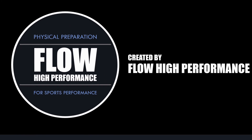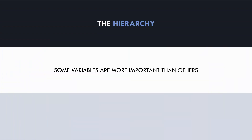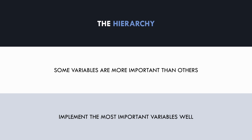Let's first establish what exactly we mean by organising hypertrophy training into a hierarchy. Essentially, a hierarchy shows that certain variables are more important than others to achieve muscle growth. So when we train for hypertrophy, we want to ensure that the most important variables are performed well, and once they are taken care of, we can then worry about the subsequent variables. This also means that we shouldn't get caught up in the details of the least important variables without ensuring the basics are in place.